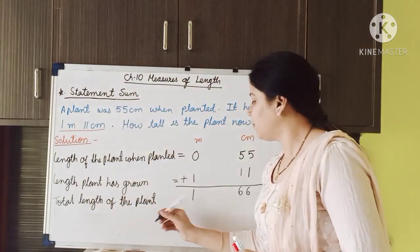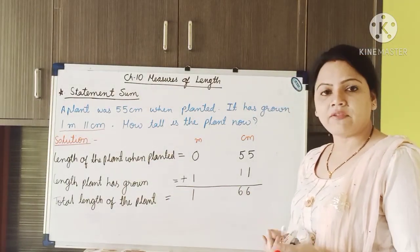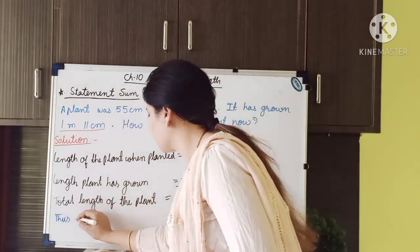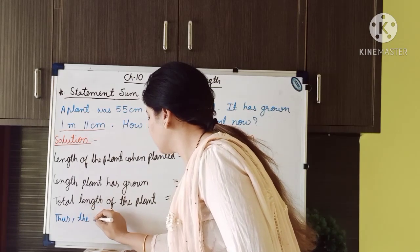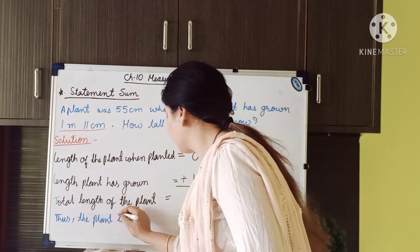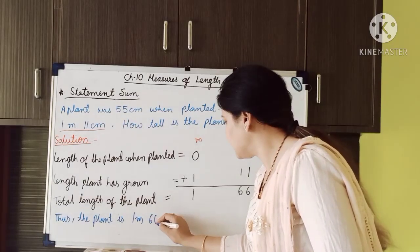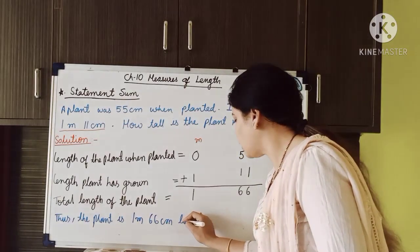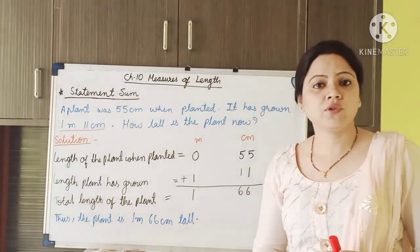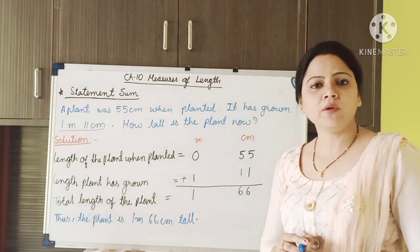So the total length of the plant is equal to 1 meter and 66 centimeter. In the final statement we can write: thus the plant is 1 meter and 66 centimeter tall. Understood now. I hope this is clear to you. Just pause this video and write this example also in your maths notebook.